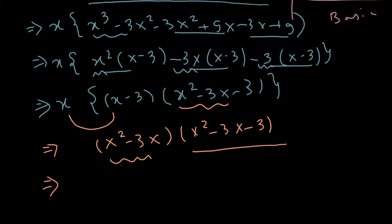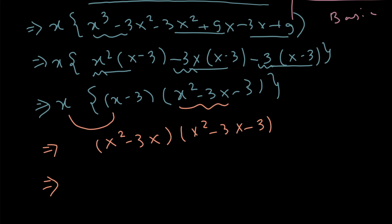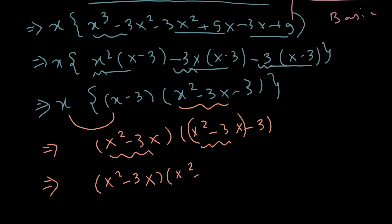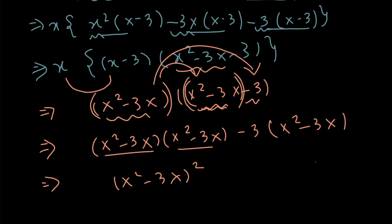Wait — if you simply open this bracket as x² into x², x² into 3x, x² into -3, and so on, you will just get back the original left-hand side we are trying to modify. So we need to do something different. I will make a pair like this way, with -3 separate. So (x² - 3x) multiplied with (x² - 3x), then -3 multiplied with (x² - 3x). This first term is simply (x² - 3x) the complete square, and the remaining term is -3 times (x² - 3x).